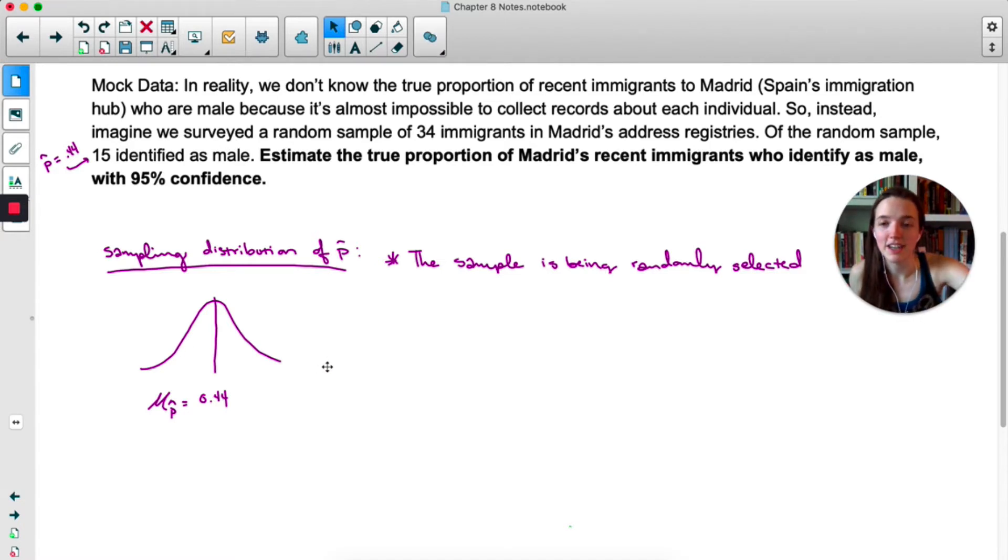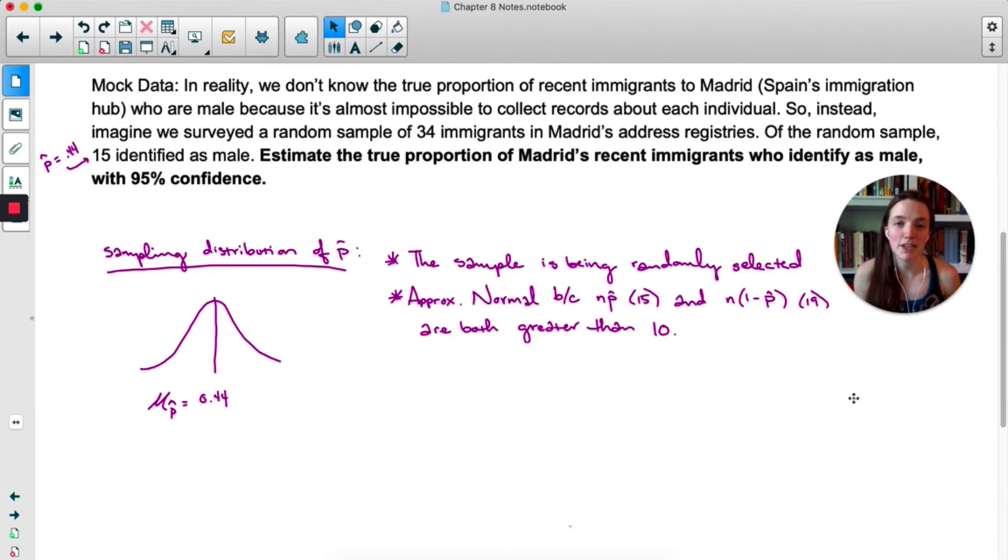If our sample isn't randomly selected it doesn't really represent the population well. If it's the first 34 people to register on any particular day there might be some lurking variable that affects whether or not they are male or female. So it's really important that our sample is random and we have that here. Now you'll notice that I've drawn a normal distribution. We know that this distribution is normal because NP and N(1-P) are both greater than 10. Now I don't actually know what P is. That's the whole point of this, to estimate the true proportion.